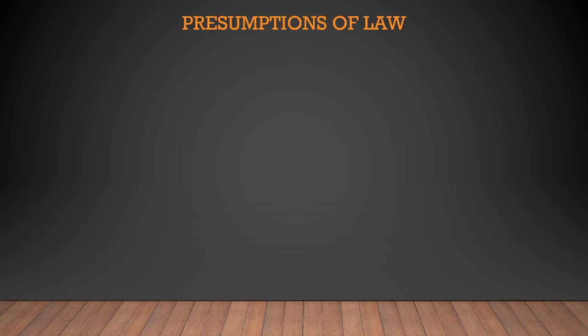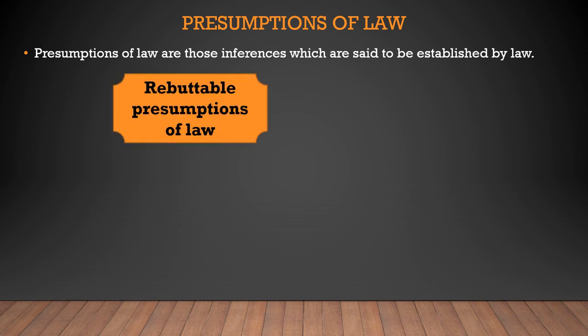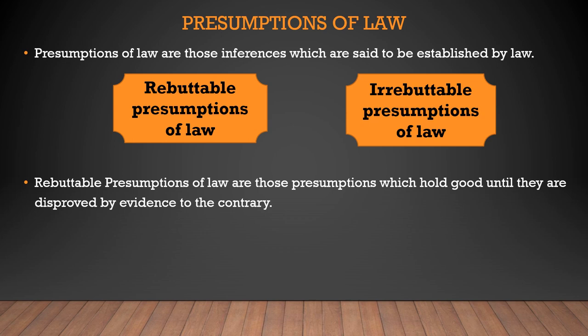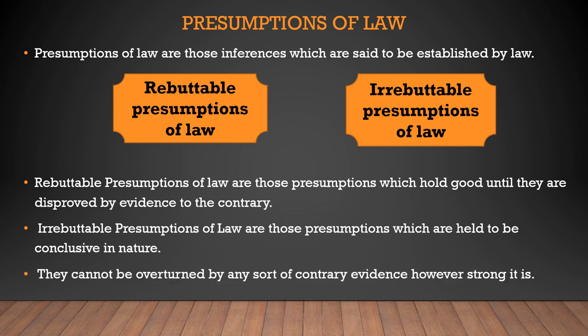The second one is presumptions of law. Presumptions of law are those inferences which are said to be established by law. There are two types: rebuttable presumptions of law and irrebuttable presumptions of law. Rebuttable presumptions hold good until they are disproved by evidence to the contrary. Generally in a criminal case, the defendant is considered innocent until proved guilty. But irrebuttable presumptions of law are those which are held to be conclusive in nature — they cannot be overturned by any sort of contrary evidence, however strong it is.